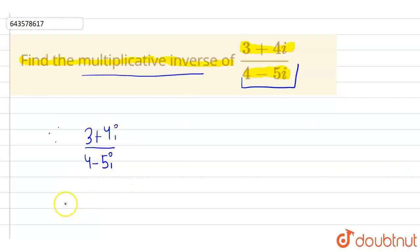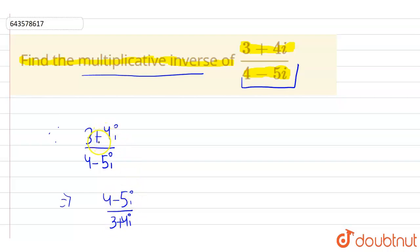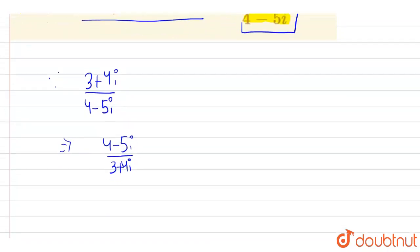To find the multiplicative inverse, all we need to do is flip the function. So if we flip the function, this will become (4 - 5i) / (3 + 4i). The reason why we flip is that if we multiply this with our given function, the product should be 1.